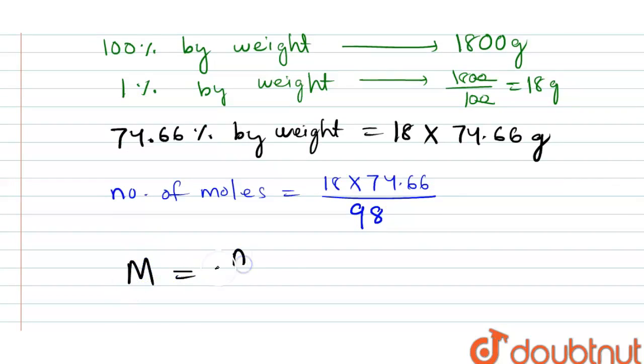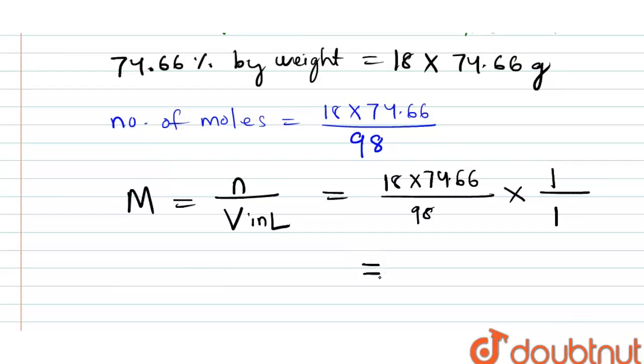Hence molarity will be equal to number of moles divided by volume in liter, that is equal to 18 into 74.66 divided by 98 into volume in liter. Volume given is 1 liter. So our value will come 13.71 molar, and this is our required answer. Thank you.